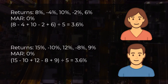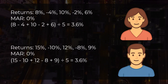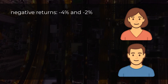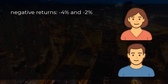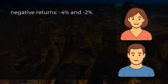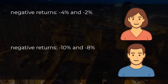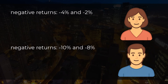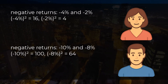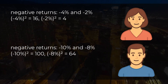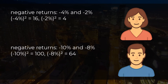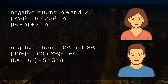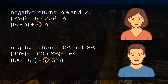Let's identify first the returns below the MAR — below the 0% line. Sarah had negative returns of -4% and -2% only, while Mike had negative returns of -10% and -8%. We then square these negative returns to make them positive, and find the average of these squared negative returns by dividing the total by the number of years, which is 5.